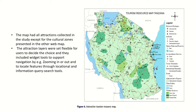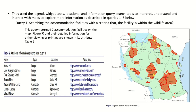Six queries were performed using the interactive tourism resource map. Query 1: searching for accommodation facilities within wildlife areas returned 7 accommodation facilities with detailed attribute information for viewing, printing, or table display. Query 2: searching for regions with wildlife national parks returned 24 regions, which is more than 70% of total regions in Tanzania.